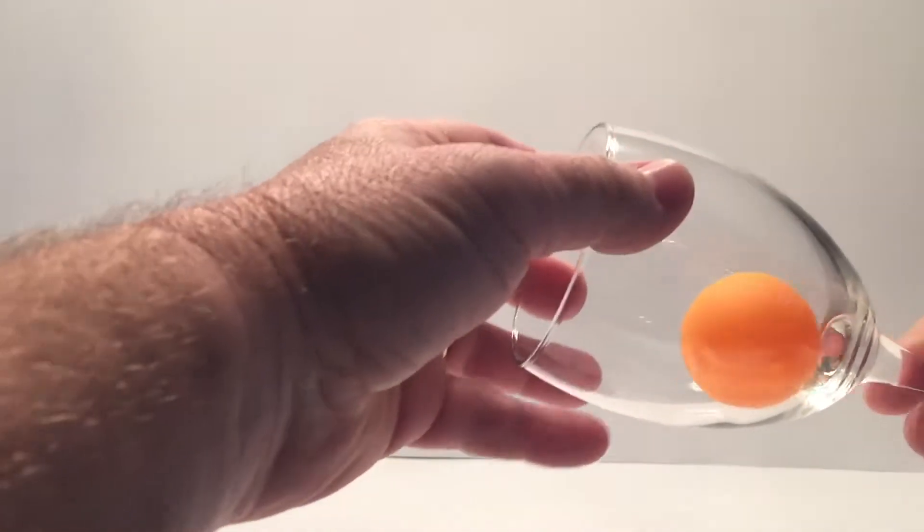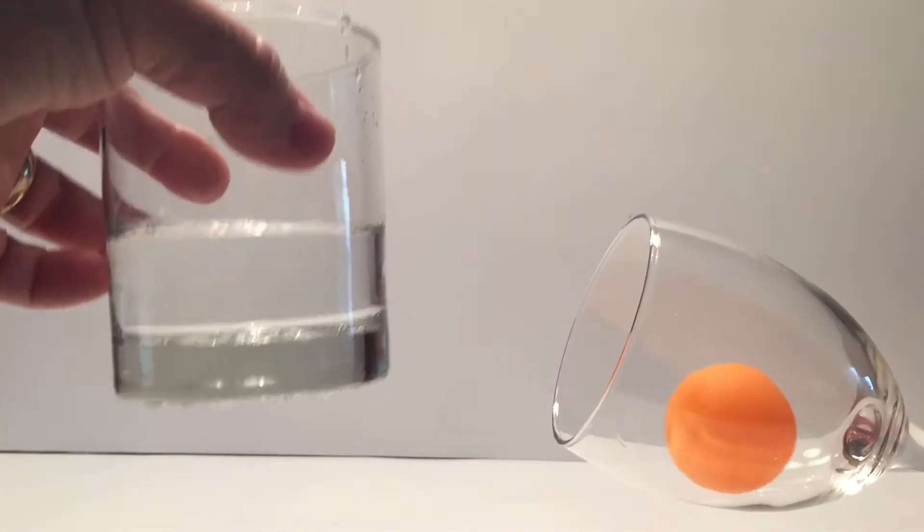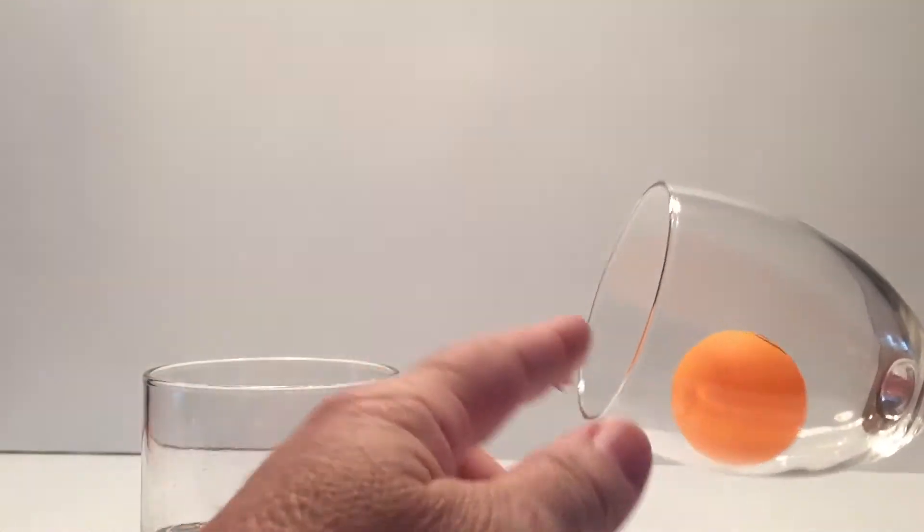Start off the experiment taking a wine glass, put your ping-pong ball inside there, take your glass of water, dip your finger in, and wet it.